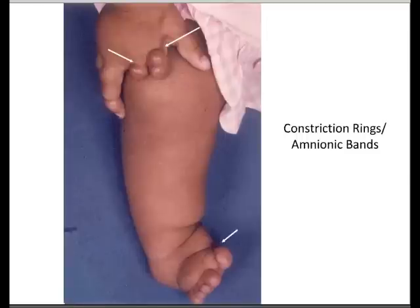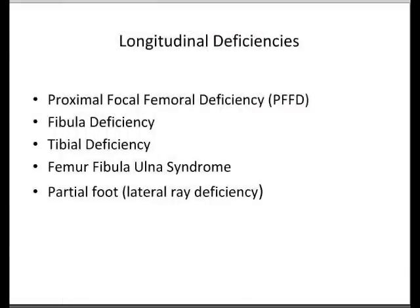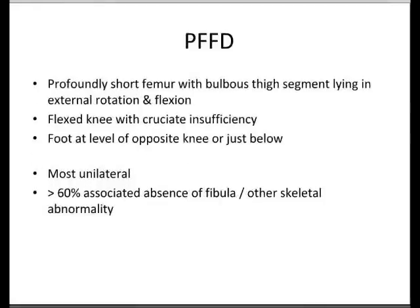In terms of longitudinal deficiencies in the lower limb, there are many which I won't go into all of today — it's quite a complex area. Proximal focal femoral deficiency, or PFFD, and fibular deficiency are the more common ones. PFFD is a profoundly short femur with a bulbous thigh segment lying in external rotation and flexion. The knee is flexed with cruciate insufficiency and the foot is at the level of the opposite knee. Most are unilateral and over two thirds are associated with a fibular or other skeletal abnormality.